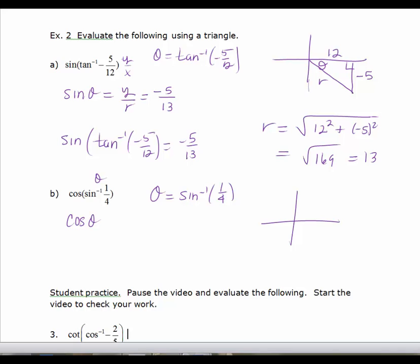The inverse sine, when the ratio is positive, is in the first quadrant. I'll let this be my theta. The sine is y over r, so I know the hypotenuse here is 4. The y value is 1. I need to find x.